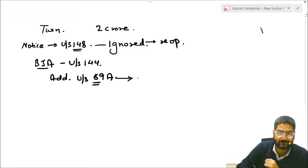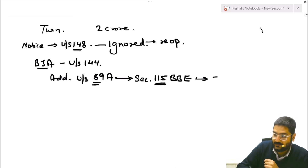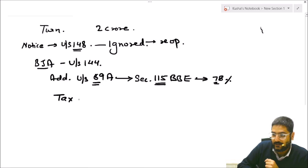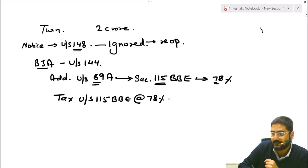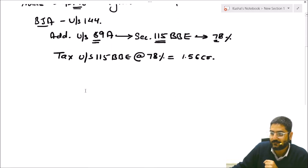Along with Section 69A, Section 115BBE automatically comes into play. The effective tax rate under Section 115BBE is 78%. So if you do not give any reply to the notice, your tax liability under Section 115BBE at 78% comes to ₹1.56 crores.